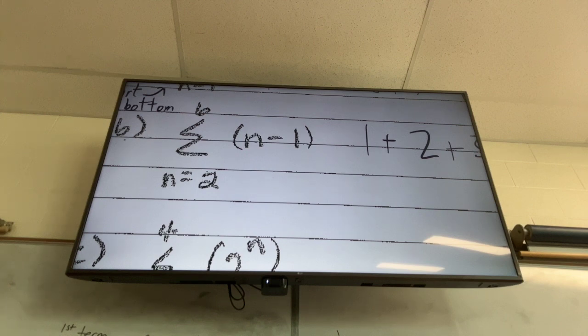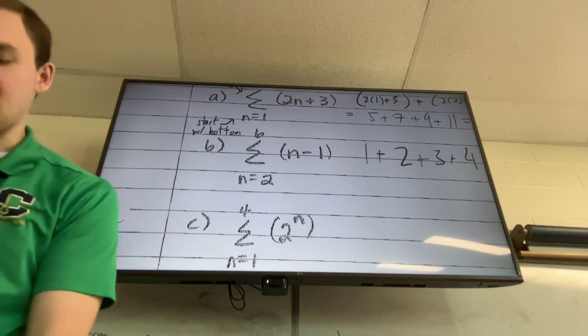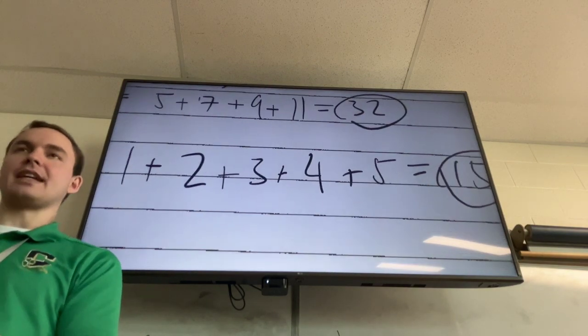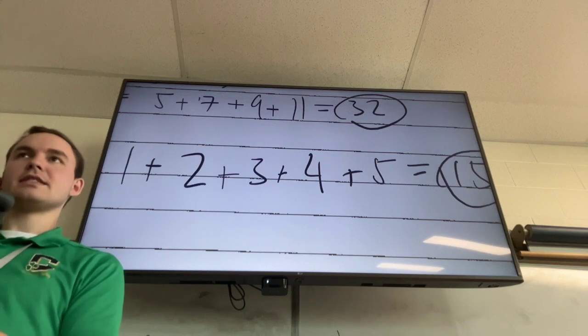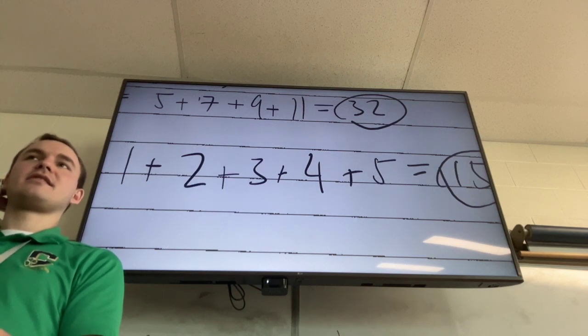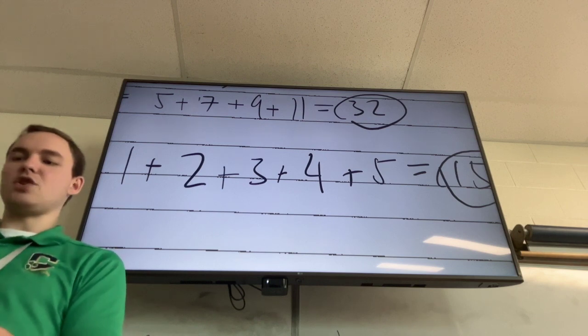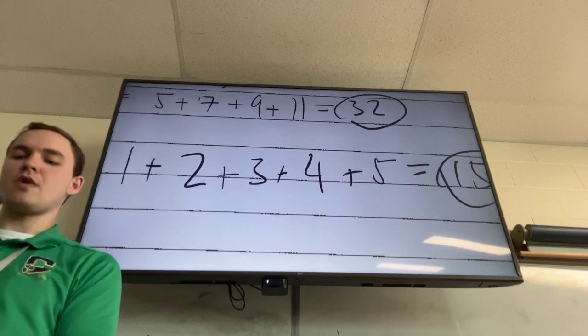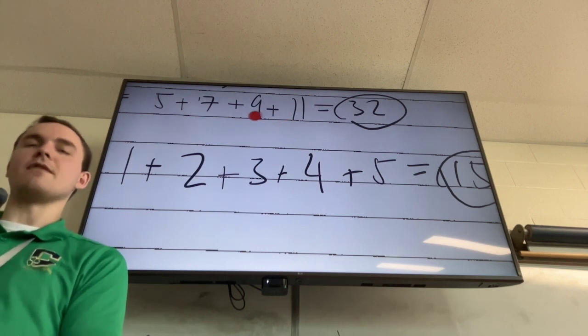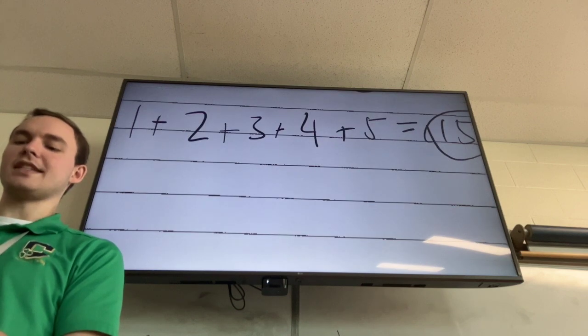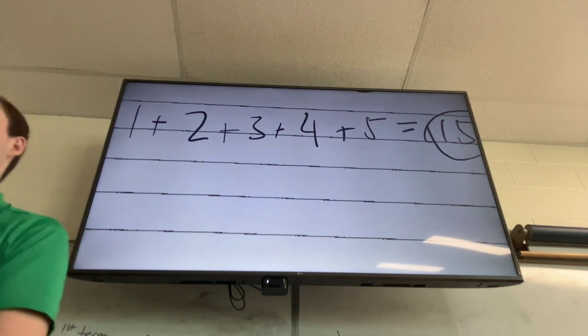So like 1, 2, 3 is a sequence. 1 plus 2 plus 3 is a series. Series just equals a single number. So these are arithmetic sequences. Do we see why? How did I go from 5 to 7? Added 2. How did I go from 7 to 9? Added 2. There's a common difference. There's a difference of 2 between each consecutive term every time.